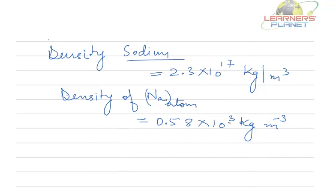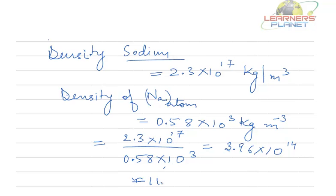If you compare the two densities, that is nuclear mass density and atomic mass density, what you are going to get is 2.3 into 10 to the power 17 divided by 0.58 into 10 to the power 3, which is equal to 3.96 into 10 to the power 14. So the order of magnitude of the ratio of the two densities is 10 to the power 14.